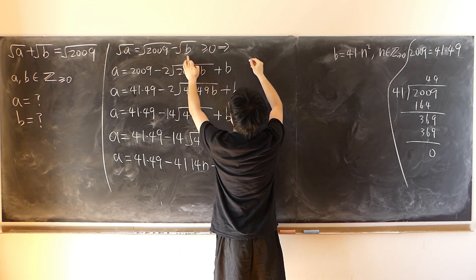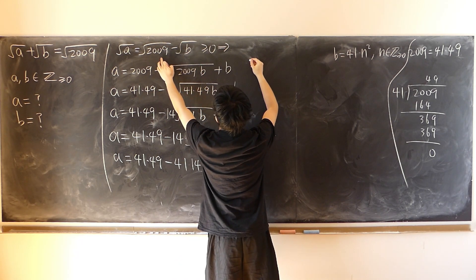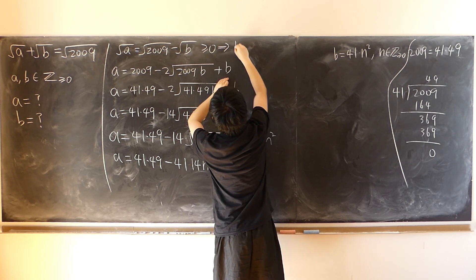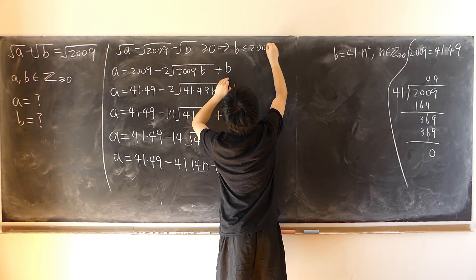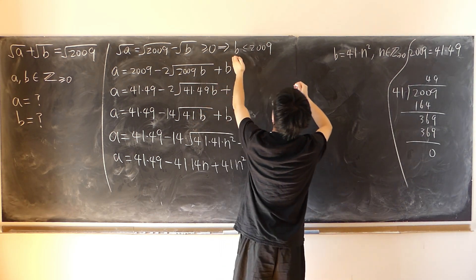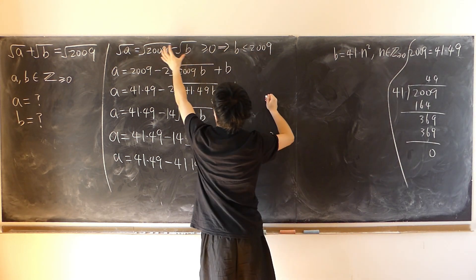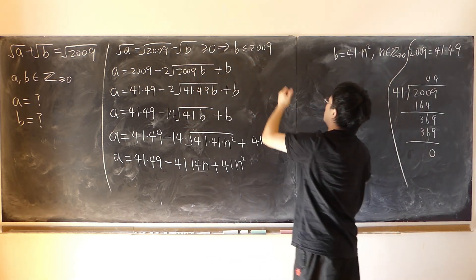So square root of b is less than or equal to square root of 2009. So in other words, obviously, b must be less than or equal to 2009. Because otherwise, if b is bigger than that, this would be definitely negative. So this is our restriction.